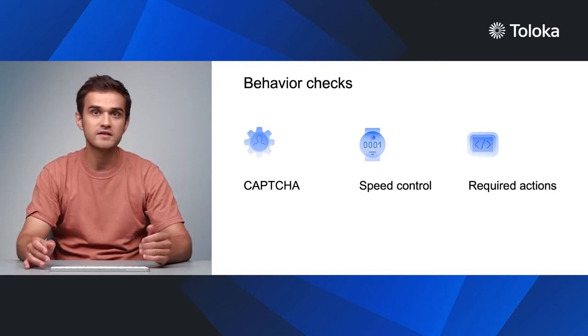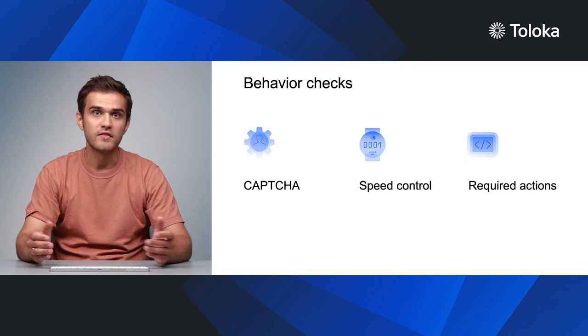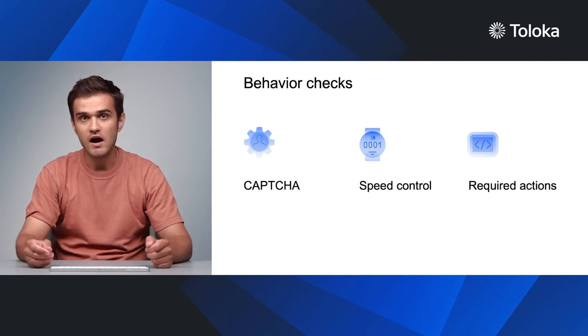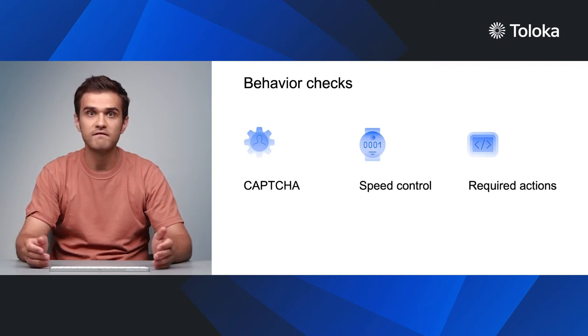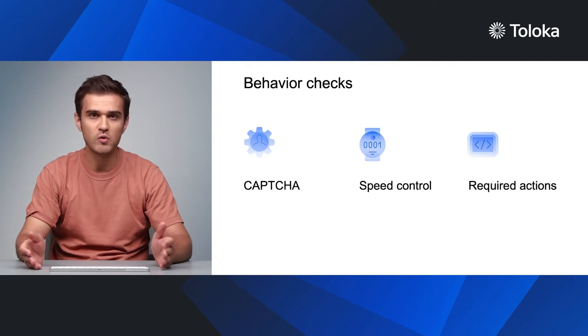Create custom checks using JavaScript that cover possible actions in your interface. For example, are there tasks that involve watching a video but performers submit a response without having watched it? How can you make sure that performers who pass all the behavior checks are actually making good quality assessments and providing good data labels?